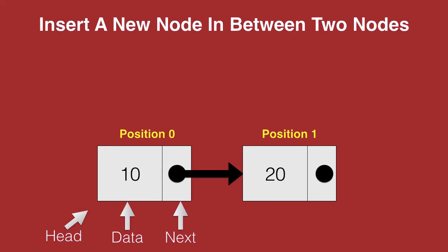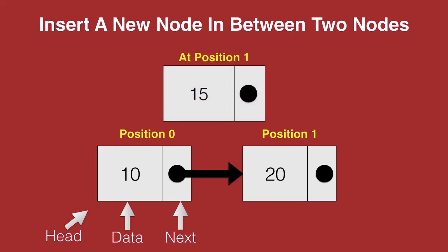What we are trying to do here is insert a new node with data 15 such that 15 is placed at position 1 in between 10 and 20. So the next of 10 needs to point to 15, and the next of 15 needs to point to 20. Let's see how to do that.